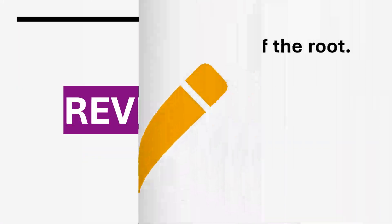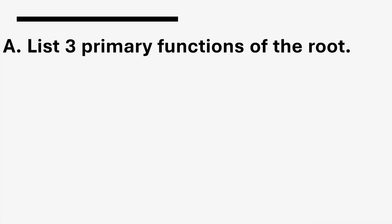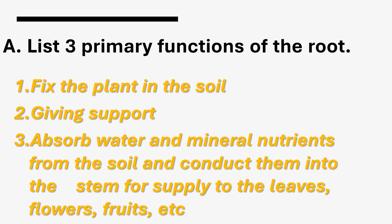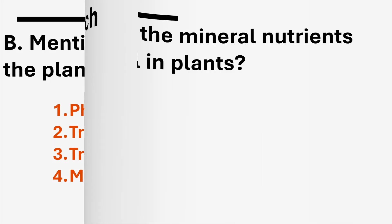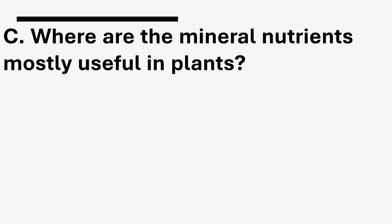Revision. List three primary functions of the root: fix the plant in the soil giving support, absorb water and mineral nutrients from the soil and conduct them into the stem for supply to the leaves, flowers, and fruits. Four purposes for which the plant needs water: photosynthesis, transpiration, transportation, and mechanical stiffness. Mineral nutrients are constituents of cells and cell organelles, and needed for synthesis of compounds or enzymes within the cell.